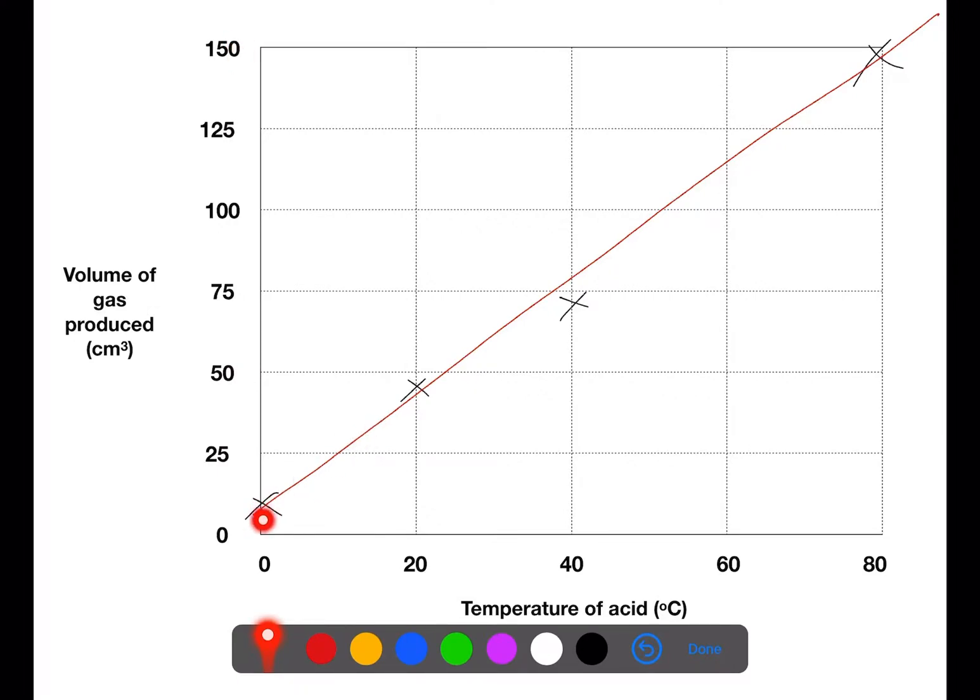We've then plotted the points for 0, 20, 40 and 80. We have no value for the 60. We then have a line of best fit which is straight. You can see that I have not joined from point to point. We need to have a straight line which goes through as many of the points as possible.